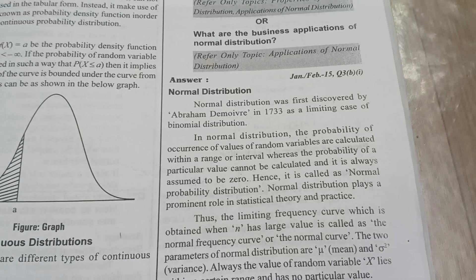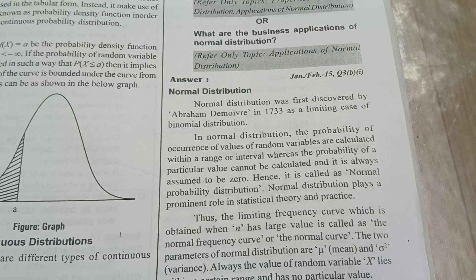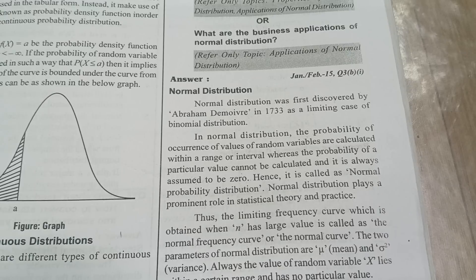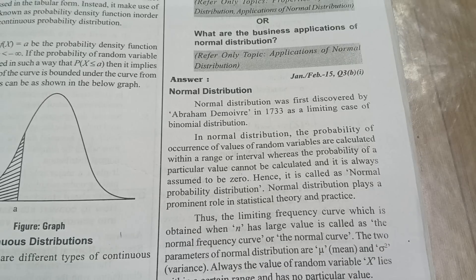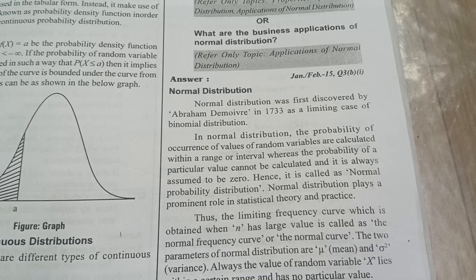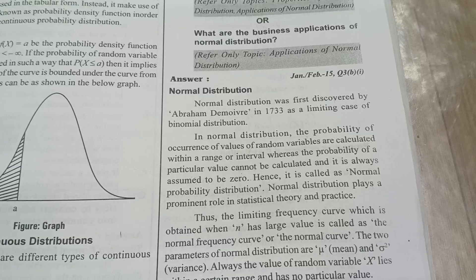Normal distribution question is there. What are the applications of normal distribution? This is one of the important questions in unit number 2. Normal distribution was discovered by Abraham DeMoivre in 1733. Whatever the binomial distribution limitations are there, to prevent that, this normal distribution came into existence. In normal distribution, whatever the probability is there, whatever the things are calculated, it will be a probability of always getting zero. Normal distribution will always get zero; that is called normal probability distribution.